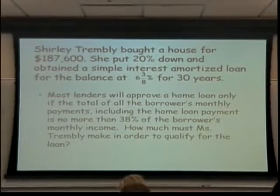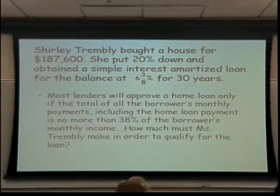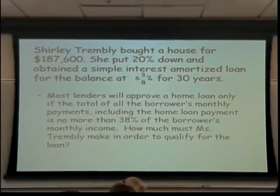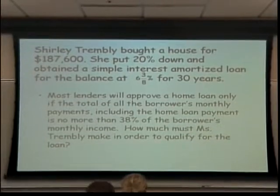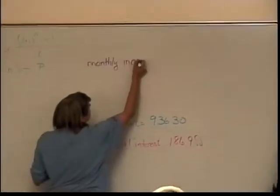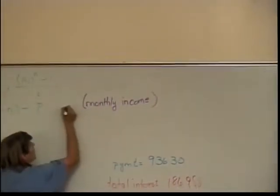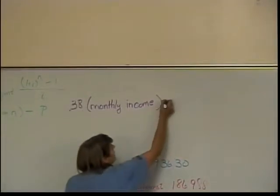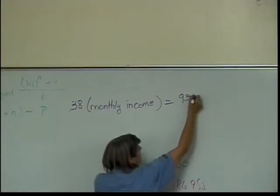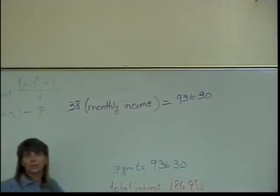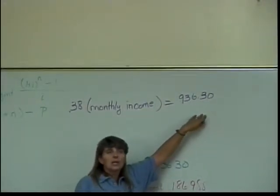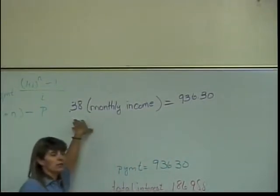Her life does. So, she can have no other monthly commitments. And what this is saying is that her monthly income times 38%, which is .38, has to be at least $936.30. So, 38% of her monthly income has to equal this number. You tell me, how do I solve this equation?